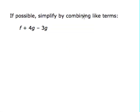Okay, one more. We're going to combine the like terms. We see we have f and g's. These two terms are alike because they both have a g, and that's the only two we can combine. 4g minus 3g is 1g, or we can simply put g. Thank you.